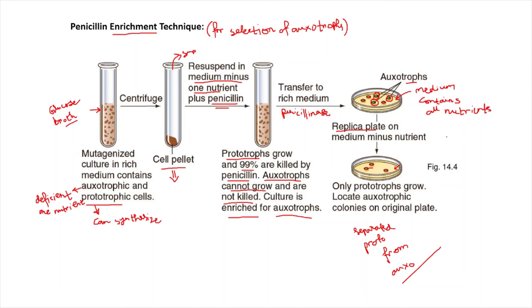Someone may ask why we are replica plating here. Replica plating is mainly performed to screen for a desired phenotype — I will talk about it in a separate video. After collection of auxotrophs from this medium, we also desire to collect all the prototrophic cells, so we replica plate the prototrophic cells onto a new medium and collect them from there. Replica plating is mainly performed for the screening of a desired phenotype.